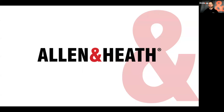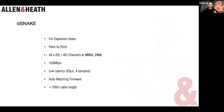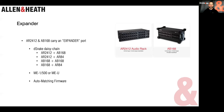George Espinoza asked whether you can connect two AR2412 boxes together. DSnake — the protocol used with AR and AB stage boxes — is 40 input channels and 20 output channels maximum. Since the AR2412 is 24 inputs, daisy chaining two would give 48 inputs and 24 outputs, exceeding DSnake's 40 by 20 limit. The AR2412 can only be daisy chained with an AB168 or an AR84.